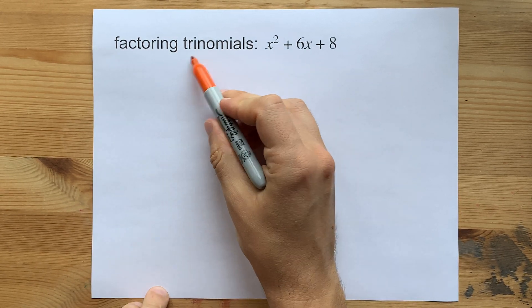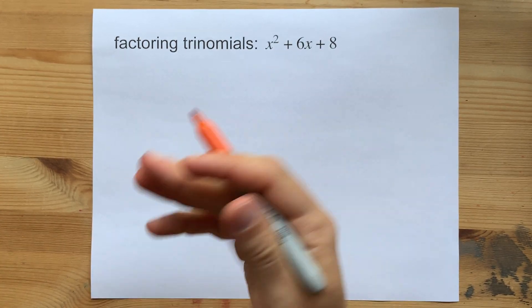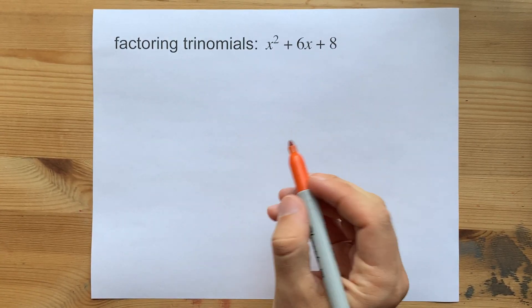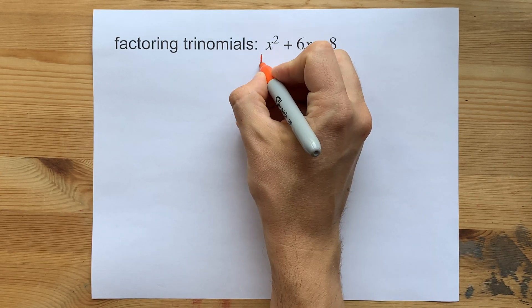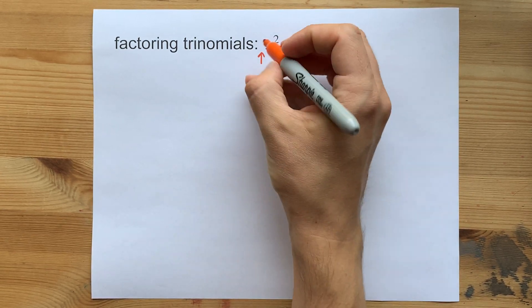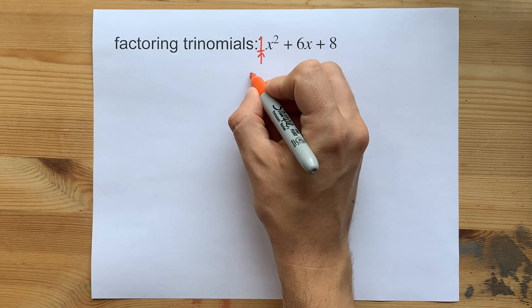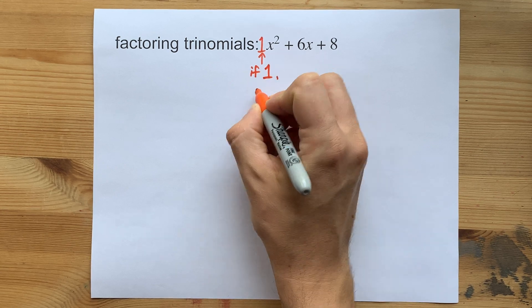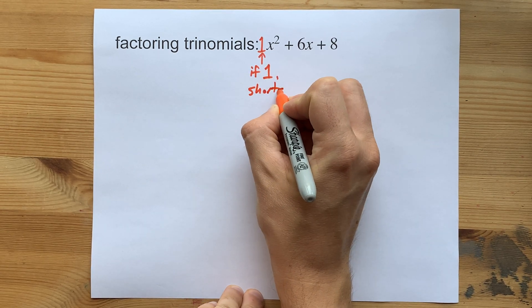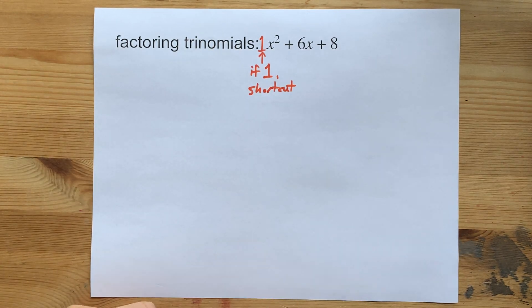When you are factoring a trinomial like x squared plus 6x plus 8, the way I personally do it is to make sure that I don't have anything in front of my x squared. By that, I mean there's technically a 1 written here, but there is a shortcut to factoring that you should know if there's nothing written in front of the x squared.